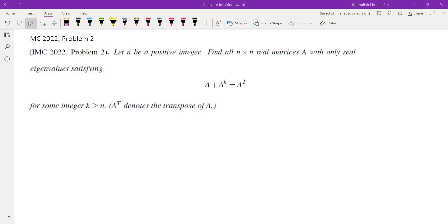Here is the statement: let n be a positive integer, find all n by n real matrices A with only real eigenvalues satisfying A plus A to the K equals A transpose for some integer K greater than or equal to N, and A transpose as usual denotes the transpose of A.